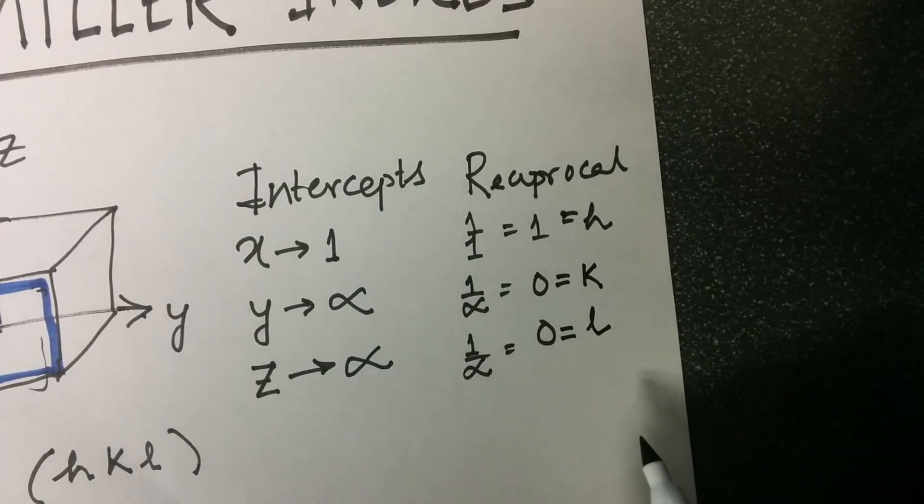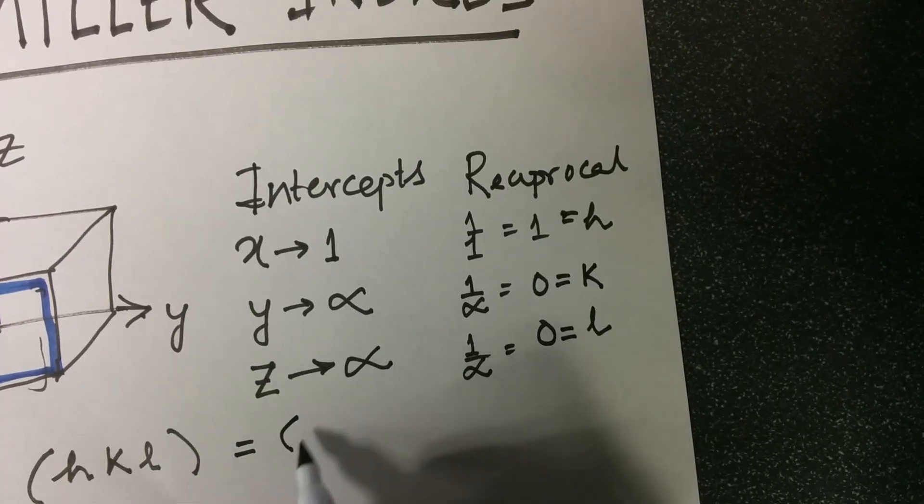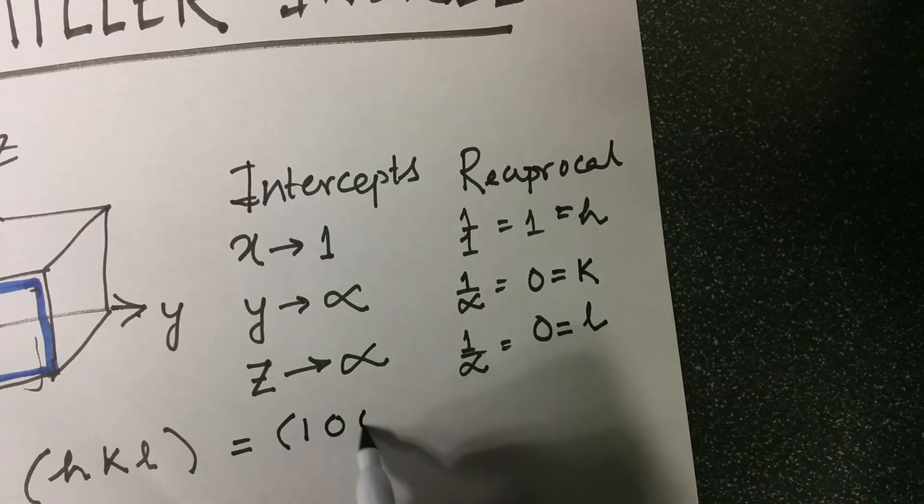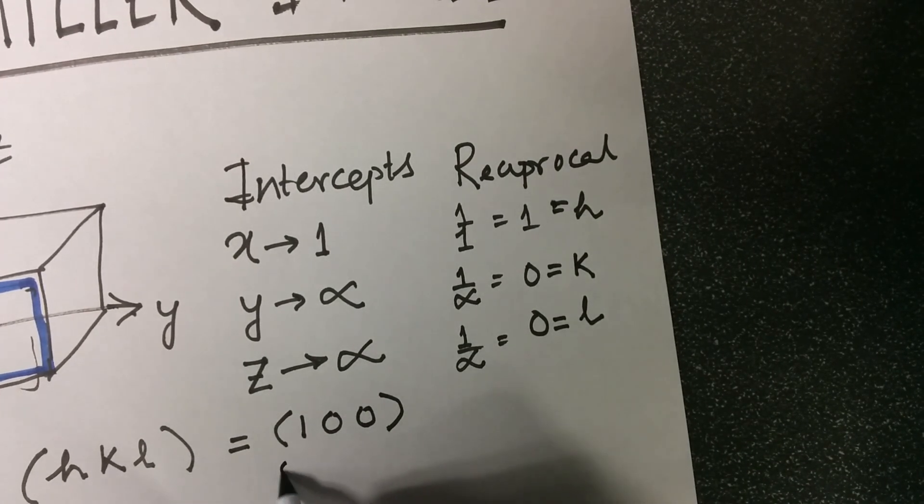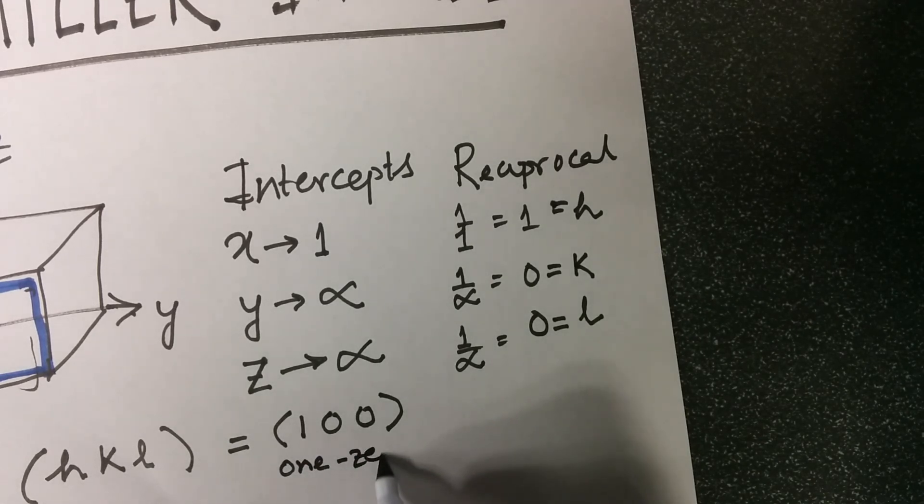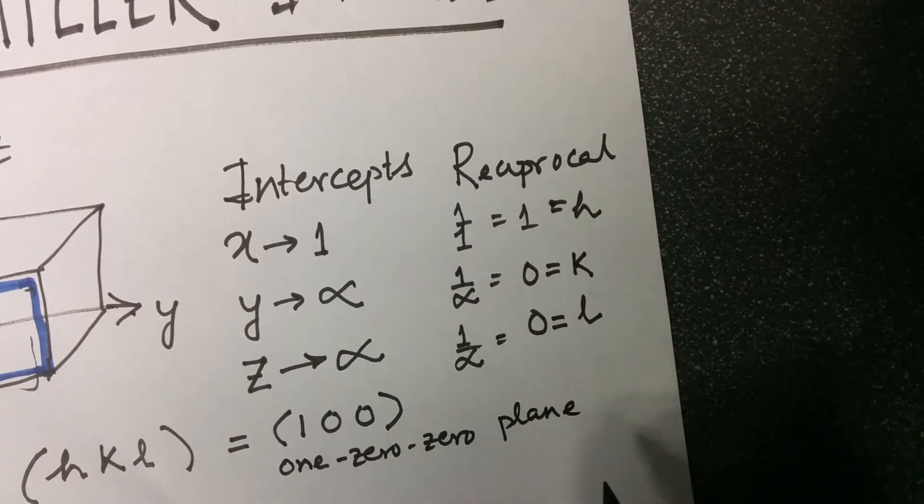Will become (1 0 0) within parenthesis. This is said aloud as 1-0-0 plane, rather than 100.